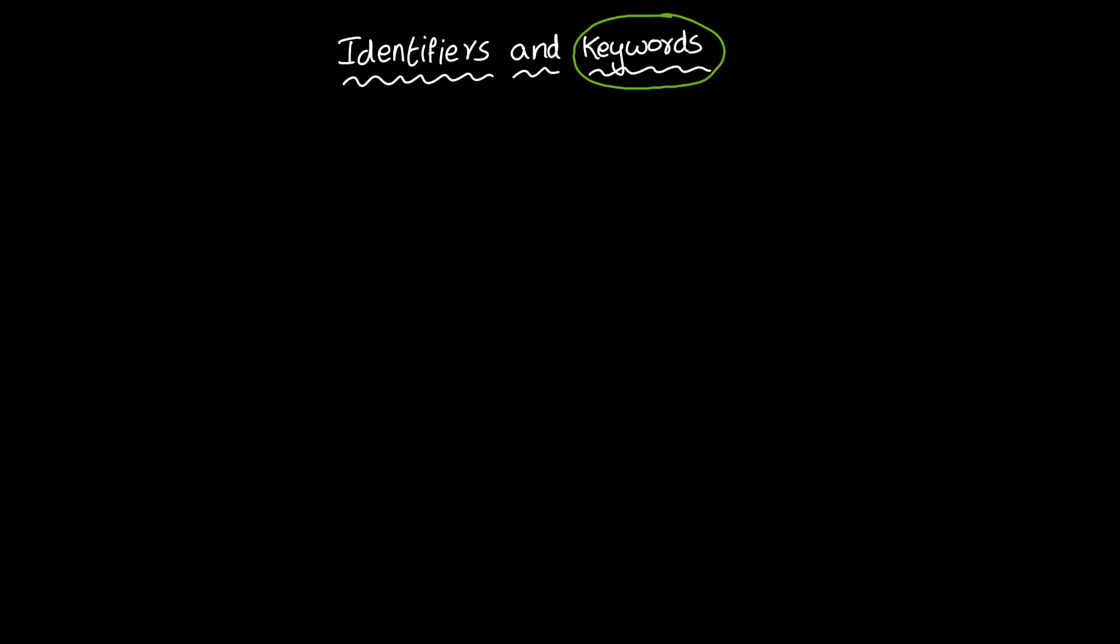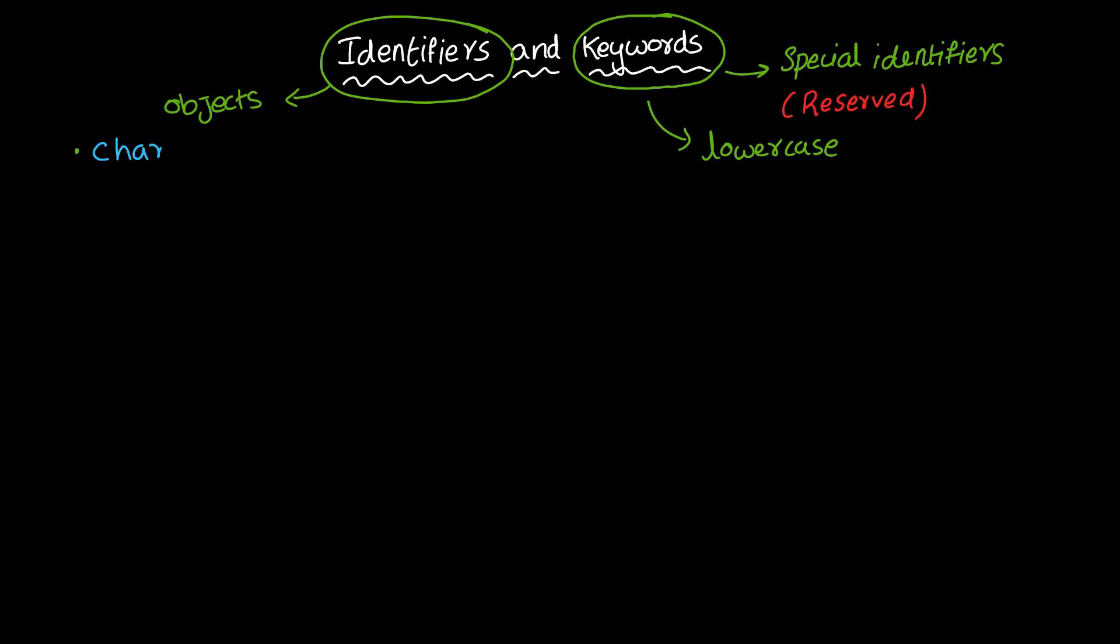Identifiers and Keywords. Keywords are special identifiers reserved to define the language constructs. Keywords are in lowercase. Identifiers are names given to objects so that they can be referenced in the design. Identifiers are made up of alphanumeric characters, the underscore, or the dollar sign.